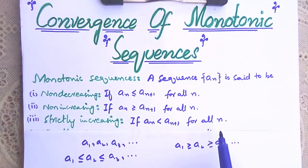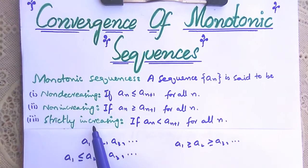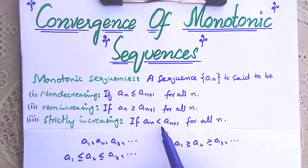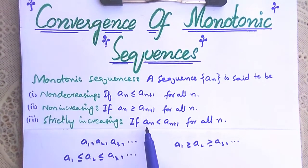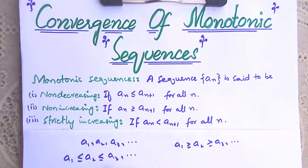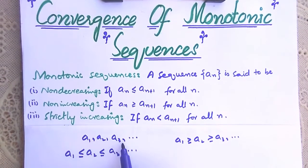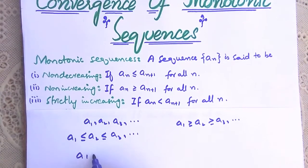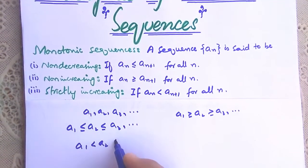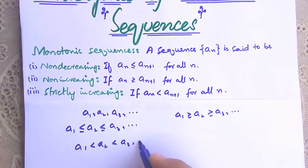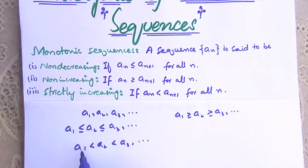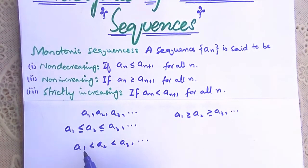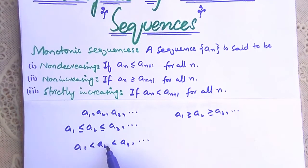Now, strictly increasing: if a_n is less than a_{n+1} for all n, then the sequence is said to be monotonically strictly increasing. Meaning if the sequence has the order a1 < a2 < a3 and so on, every preceding term is strictly less than its successive term.